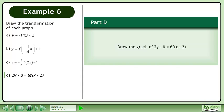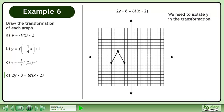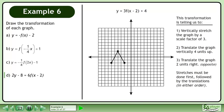In Part D, we'll draw the graph of 2y minus 8 equals 6 times f of x minus 2. We need to isolate y in the transformation. Bring minus 8 to the right side, then divide both sides by 2. This gives us y equals 3 times f of x minus 2 plus 4. This transformation is telling us to: 1. Vertically stretch the graph by a scale factor of 3, 2. Translate the graph vertically 4 units up, and 3. Translate the graph 2 units right.